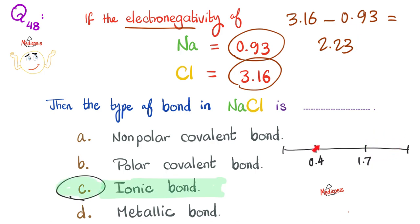But what if the difference was between 0.4 and 1.7, then this is polar covalent bond. How about less than 0.4 difference? This is a non-polar covalent bond. Because when the difference in electronegativity is huge, it means chloride is way better at attracting electrons compared to sodium, which means chloride will gain electrons and sodium will lose. When one loses and one gains, this is called ionic bond. Ionic bond is about give and take, but covalent bond is about sharing.